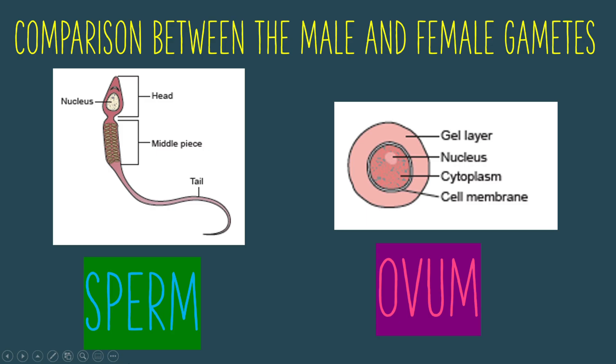Now let us look at the comparison between the male and the female gametes. The female gametes are called the ovum, or egg cells, while the male gametes are called sperms. Both ovum and sperm contain a nucleus that carries genetic information to be transferred to the offspring.